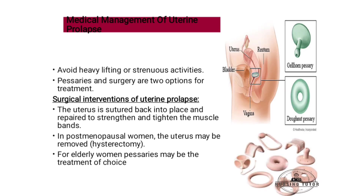Medical management of uterine prolapse includes avoiding heavy lifting or strenuous activities. Treatment options include pessaries and surgery. Pessaries are devices inserted to support the uterus and are used for patients who are not surgical candidates.